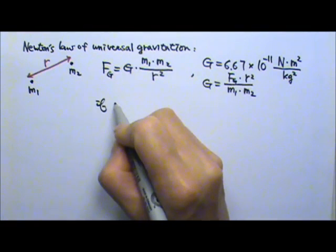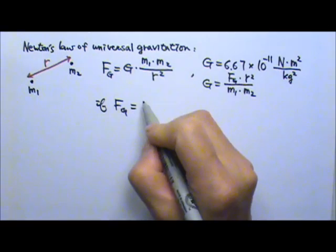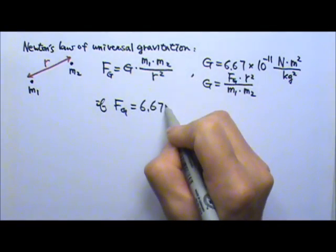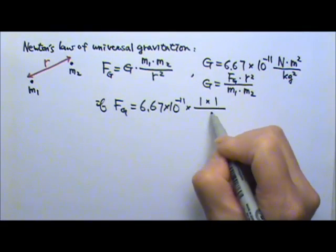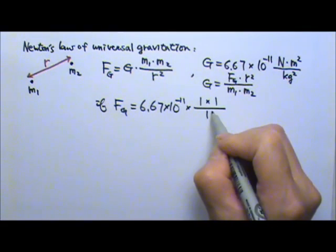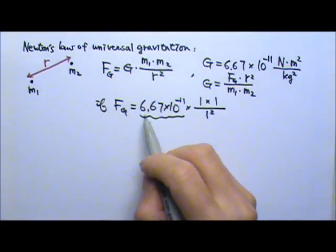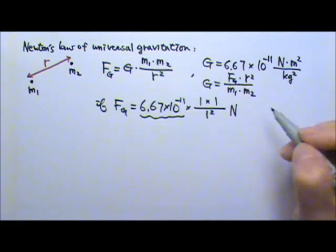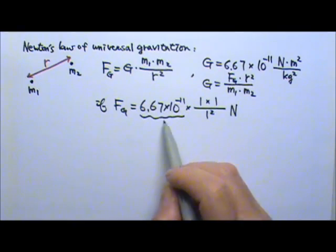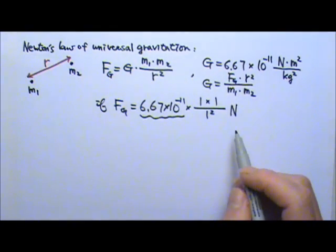So if I plug in the G is 6.67 times 10 to the negative 11 and the mass is 1 times 1 divided by the distance of 1 meter squared, this gives us 6.67 times 10 to the negative 11th newtons. It is such a weak force, no wonder we couldn't notice it.